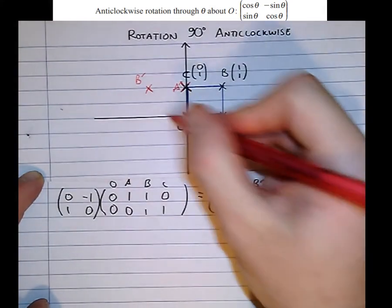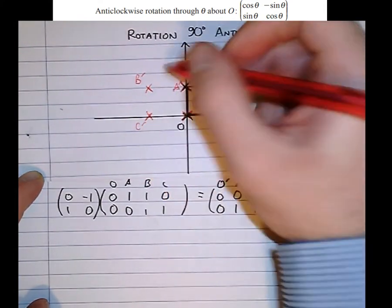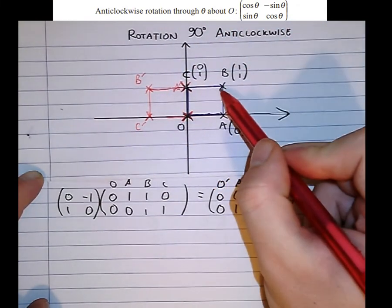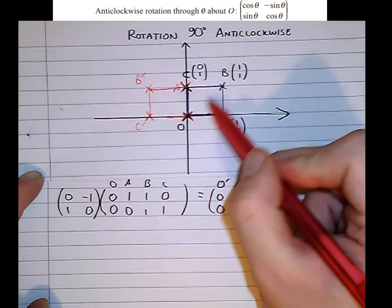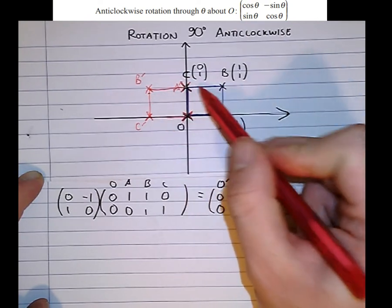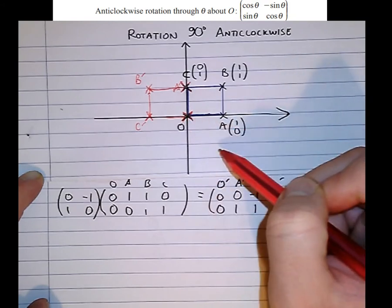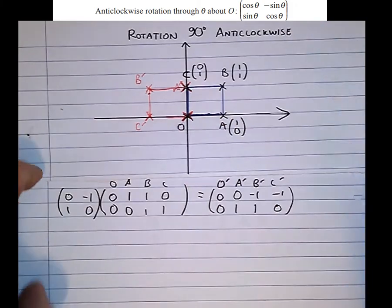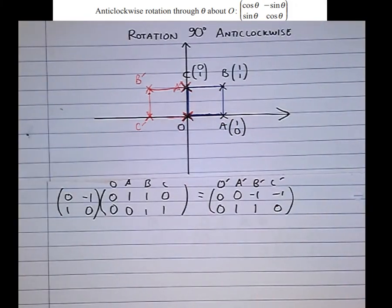Then C ended up with minus 1, 0. So C dash ended up there. So sketching that on this diagram, we can see that it rotated 90 degrees about the origin. So B would end up there. A there. O stays where it is. Now we can see that C dash, when rotating 90 degrees, would end up there. So that matrix has done exactly what we wanted.